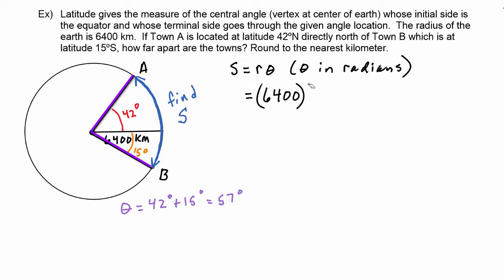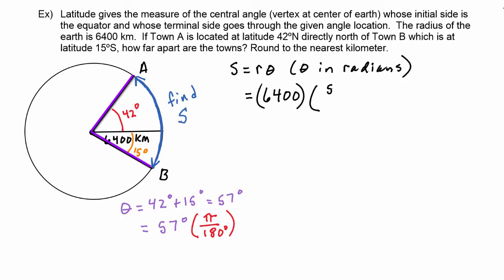We need theta in radians, so we multiply by the conversion factor pi over 180 degrees. We don't need to simplify this since we'll enter it directly into the calculator, so theta equals 57 pi over 180. The degrees cancel, leaving the angle in radian measure.